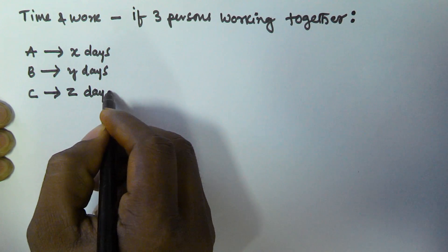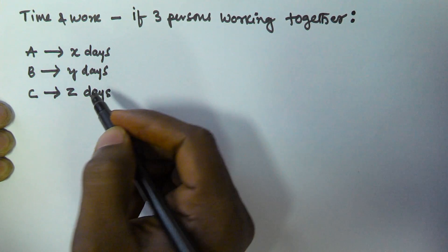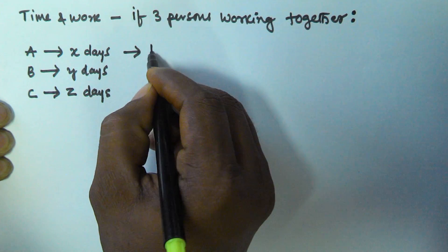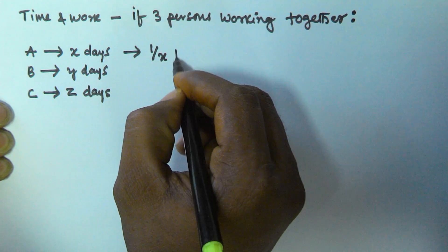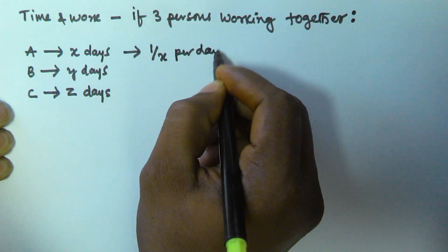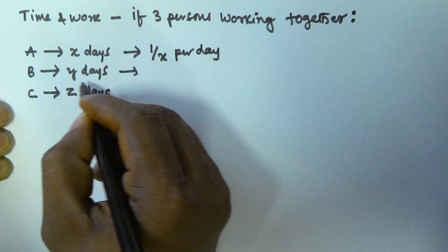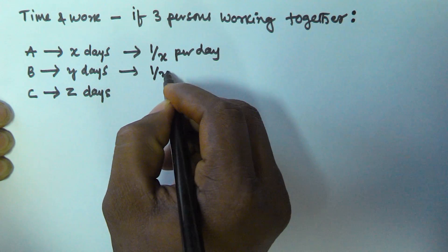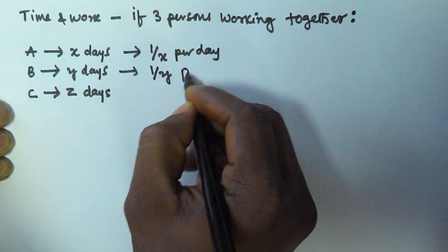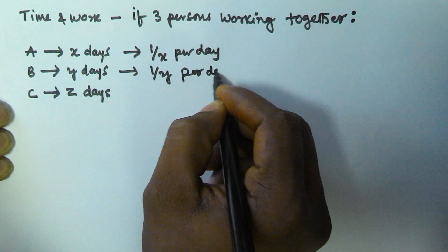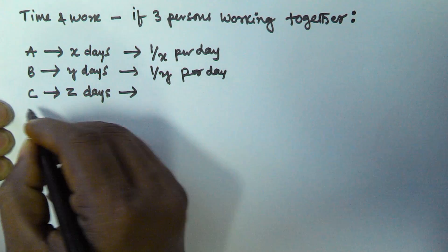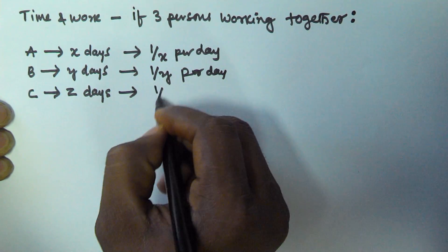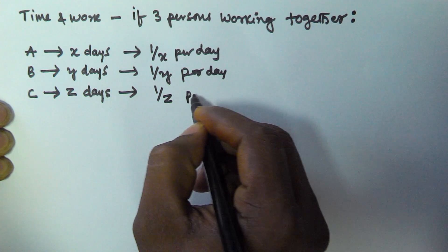If A is taking X days, that means he is finishing 1/X part of the work per day. B is taking Y days, so he is finishing 1/Y part of the work per day. If C is finishing in Z days, that means he is finishing 1/Z part of the work per day.